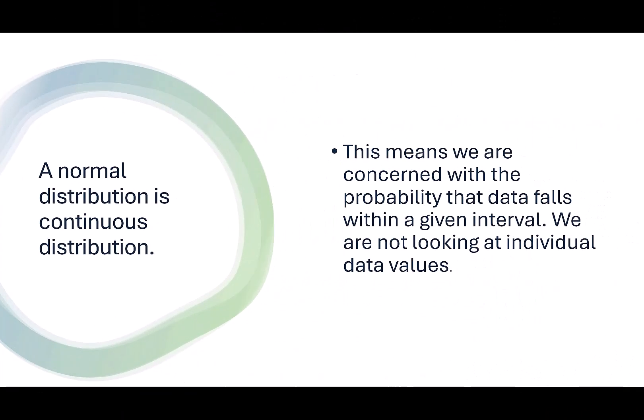A normal distribution is a continuous distribution. This means we are concerned with the probability that data falls within a given interval. We aren't looking at individual data values.